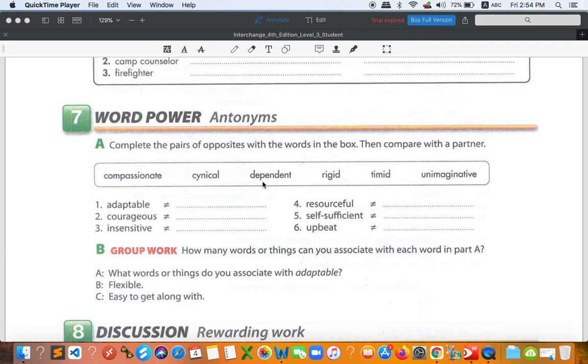Next one is dependent - you need to depend on the other, you cannot do anything by yourself. Rigid is unwilling to change ideas or behaviors. You cannot change it, it is inflexible, you can say that.